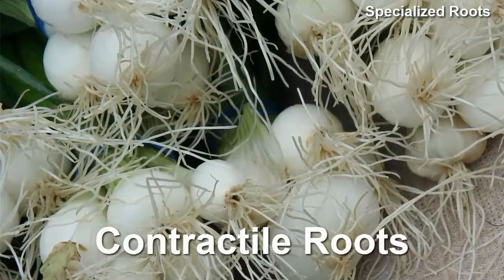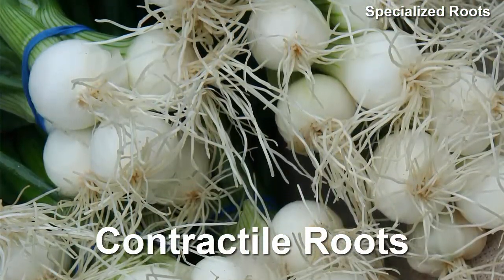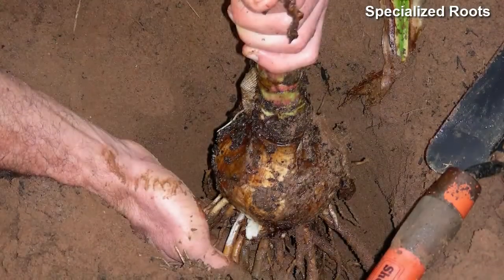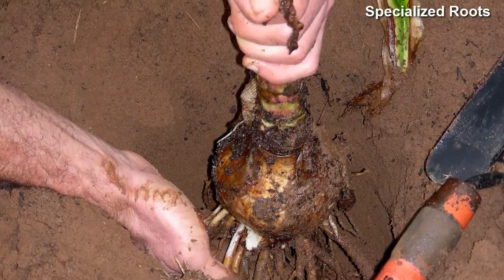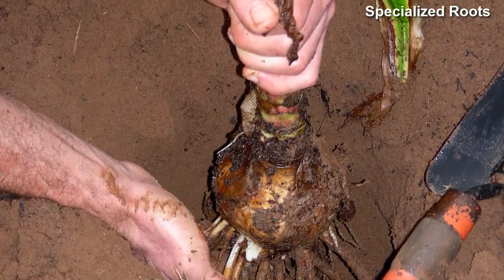Some herbaceous dicots and monocots have contractile roots that pull the plant deeper into the soil. Many lily bulbs are pulled a little deeper into the soil each year as new sets of contractile roots are developed.